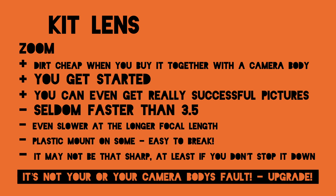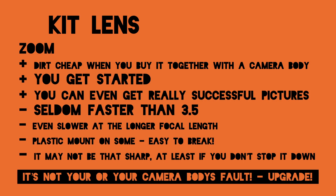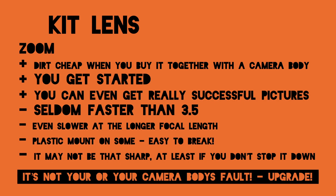Then we have a kit lens. They are often dirt cheap when you buy them together with a camera body, and they get you started. I have met people who have made really successful pictures with a simple camera body and a kit lens. But they are seldom faster than f/3.5, and even slower at longer focal lengths. Many have cheap plastic mounts that easily break, and they may not be that sharp — at least not wide open. If you feel your pictures aren't good enough, it might be that kit lens holding you back.